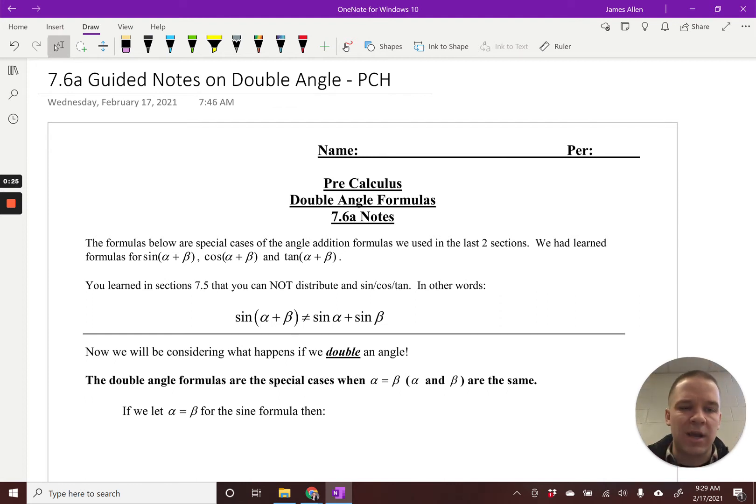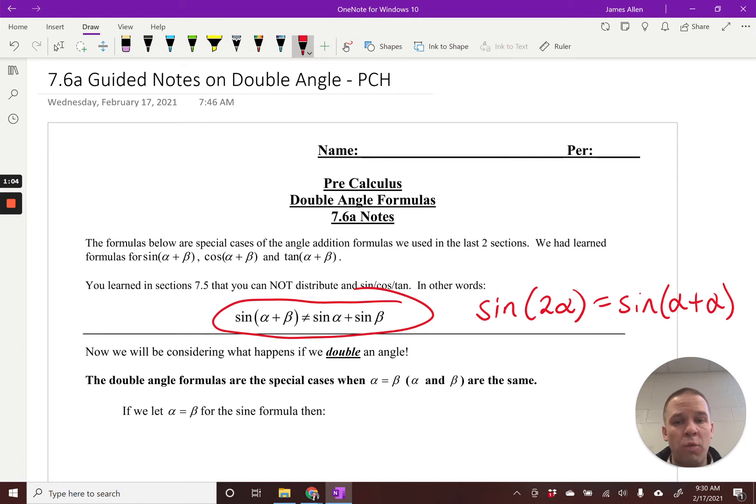Alright, so double angles. Much like our sum and difference formulas, you can't just double it or split it apart and add them together. As we said here, sine of alpha plus beta does not equal sine of alpha plus sine of beta. It's not that simple. Now the same will be true for our double angles, and we're actually going to use our sum formulas to derive these double angle formulas.